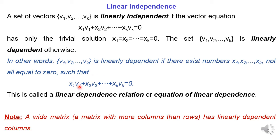The equation x1·v1 + x2·v2 + ... + xk·vk = 0 is called a linear dependence relation, or equation of linear dependence. In case of a wide matrix, where the number of rows is less than the number of columns, such as a 2×3 or 3×5 matrix, then it is called a matrix with linearly dependent columns.